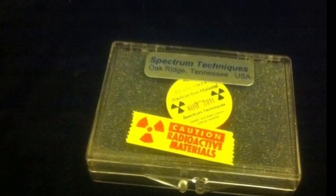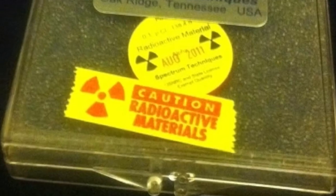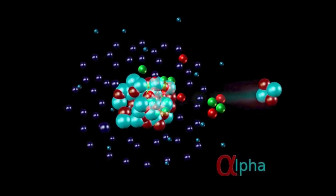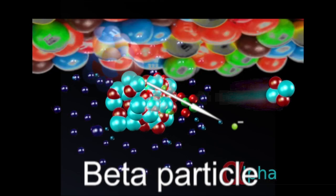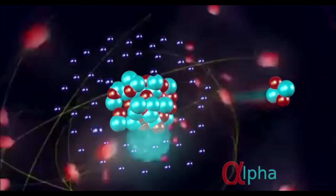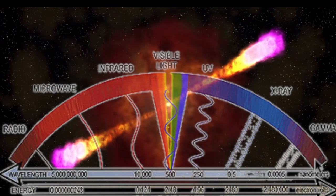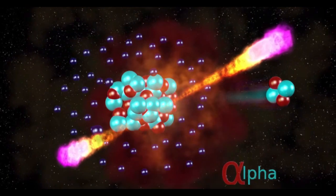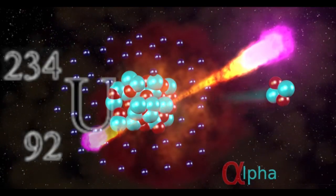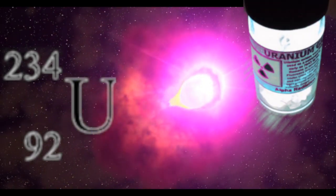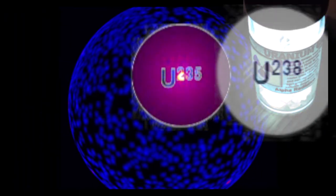Radioactive elements are those that undergo spontaneous transformation. During decay, energy is released or emitted either in the form of alpha or beta particles, or as electromagnetic radiation with energy sufficient to cause ionization, such as gamma rays or X-rays. Uranium is primarily an alpha emitter. Uranium 234 has the shortest half-life and is therefore the most radioactive, followed by Uranium 235 and Uranium 238.